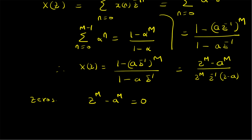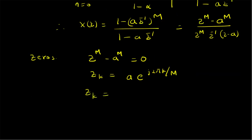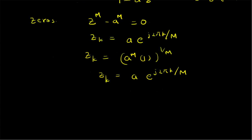To solve this equation, since the value of a is given to be positive, the zeros are given by z_k = a · e^(j2πk/M). These exponentials e^(j2πk/M) are basically the roots of unity — the complex M-th roots of 1. So our zeros are a times these complex roots of unity. We can write z_k = (a^M)^(1/M) · e^(j2πk/M), since e^(j2πk) = 1, its M-th roots are e^(j2πk/M).